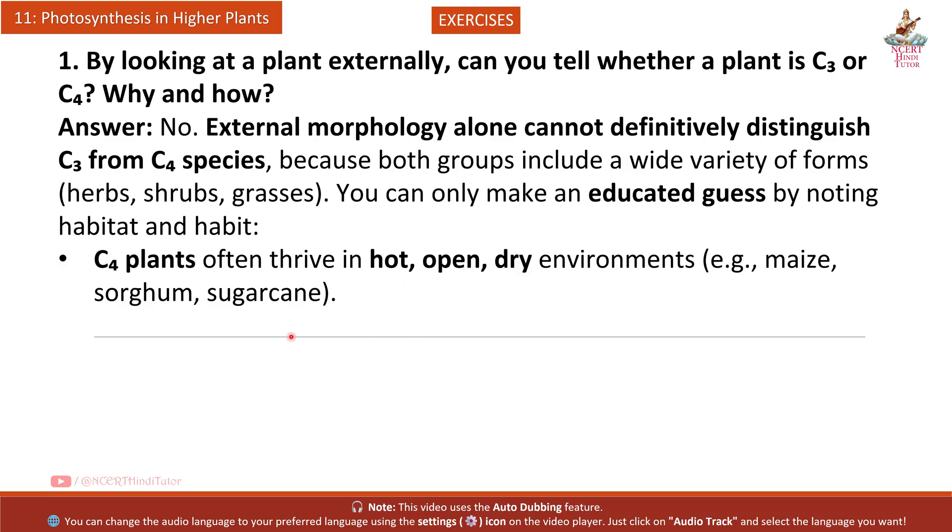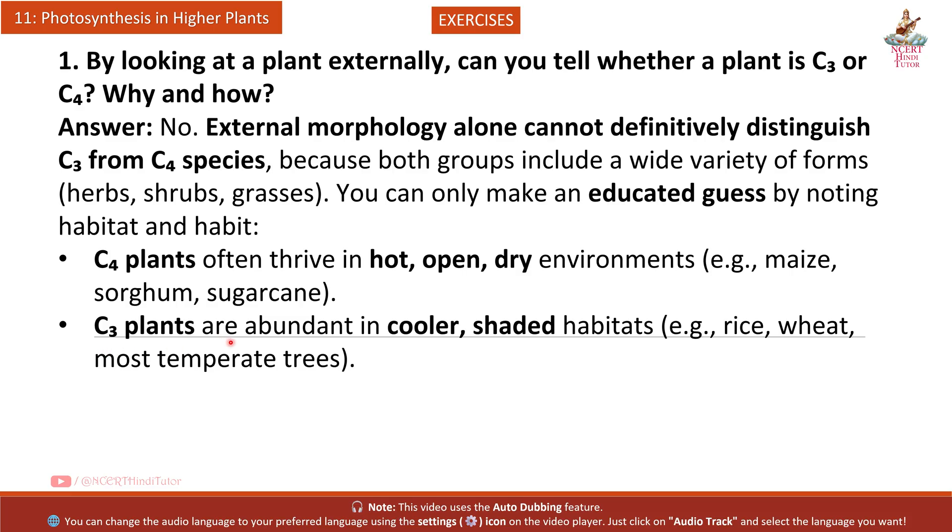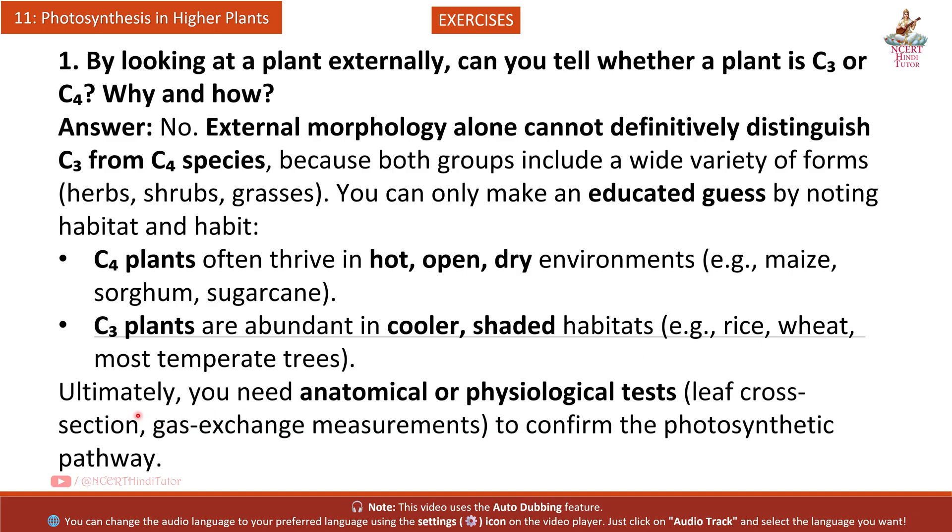Examples include maize, sorghum, sugarcane. C3 plants are abundant in cooler, shaded habitats, like rice, wheat, and most temperate trees. Ultimately, you need anatomical or physiological tests - leaf cross-section, gas exchange measurements - to confirm the photosynthetic pathway.